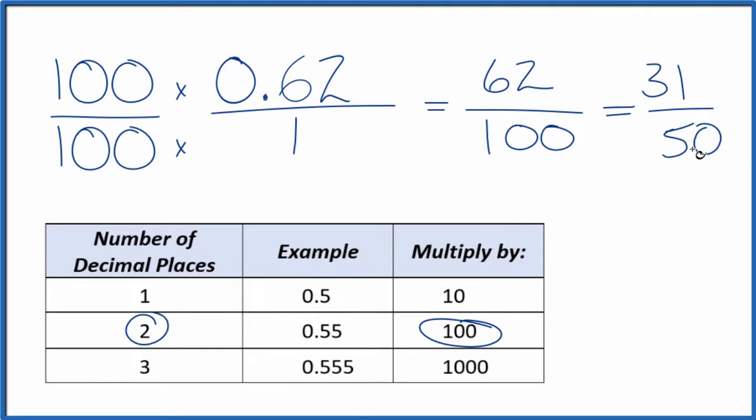We can't simplify this any further. 31 divided by 50 and 62 divided by 100, that equals 0.62. These are just fractions representing this decimal here, 0.62. This is Dr. B. And thanks for watching.